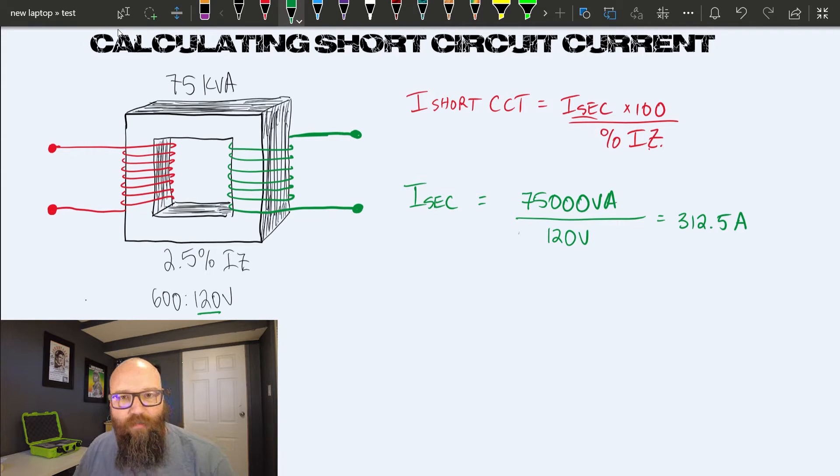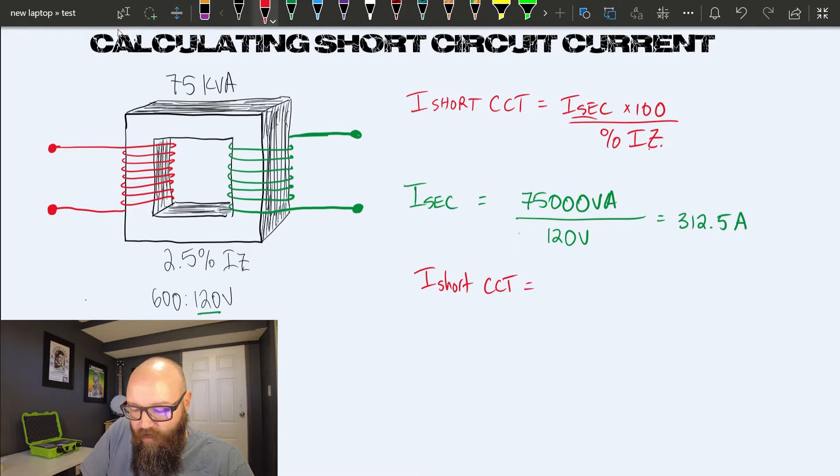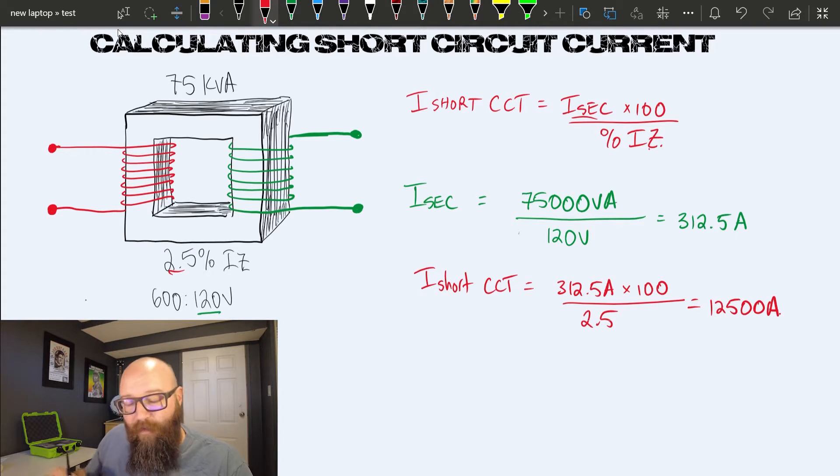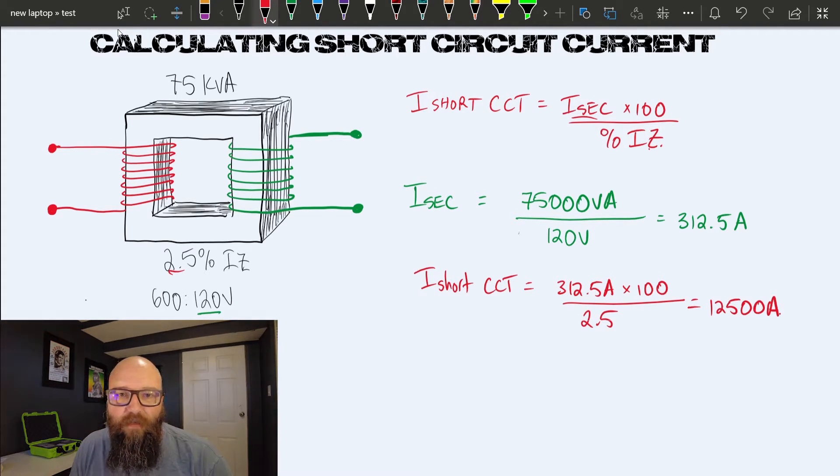With that, I can bring this into my short circuit current calculation. I can substitute those variables for values. I short circuit on this transformer is 312.5 amps times 100 divided by 2.5—I don't have to convert it. That's what that times 100 does. This spits out a number around 12,500 amps. This is the available short circuit current on this system—the potential fault current.